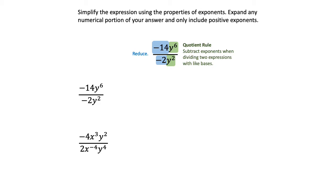Go ahead and look at that first expression: negative 14 over negative 2, and think about how you would reduce that fraction. If you divide by negative 2, you'll get a 7 in the numerator and a 1 in the denominator. So the new expression would be 7y to the 6th power over y squared.